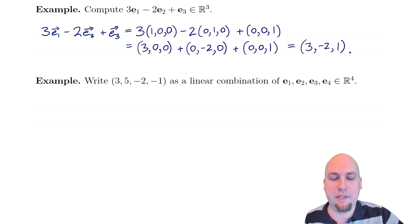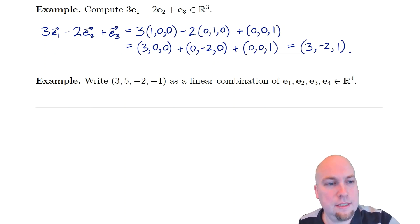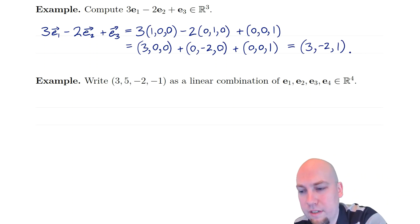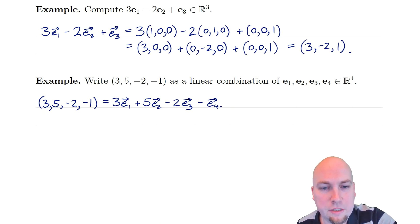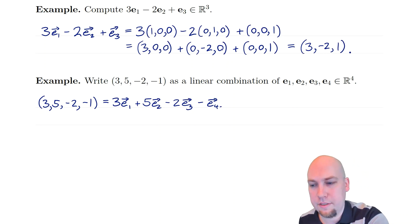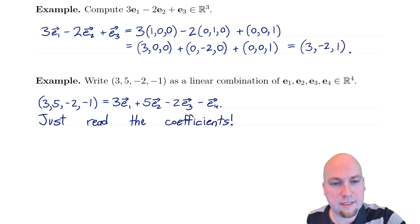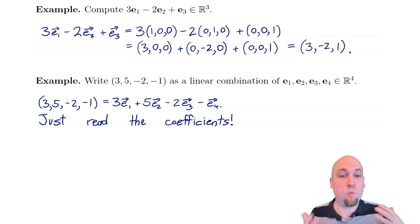Now let's do this the other way around: write the vector [3,5,-2,-1] as a linear combination of the standard basis vectors. You just peel off the entries into coefficients, reading them off: 3·e1 plus 5·e2 minus 2·e3 minus e4. Always, always, always — the coefficients in the linear combination are just the entries in the vector, as long as you're using these standard basis vectors. That's why we like them.